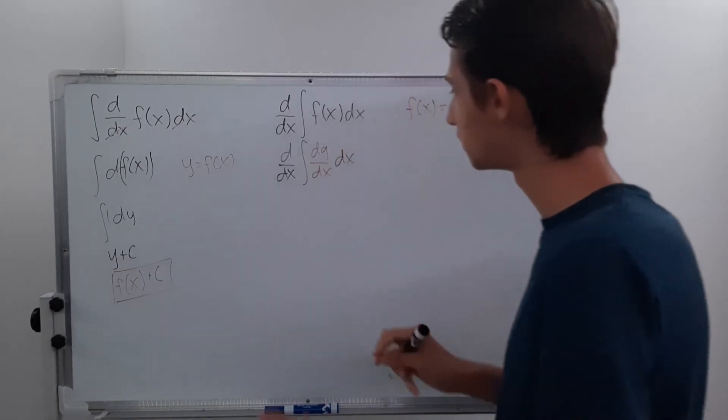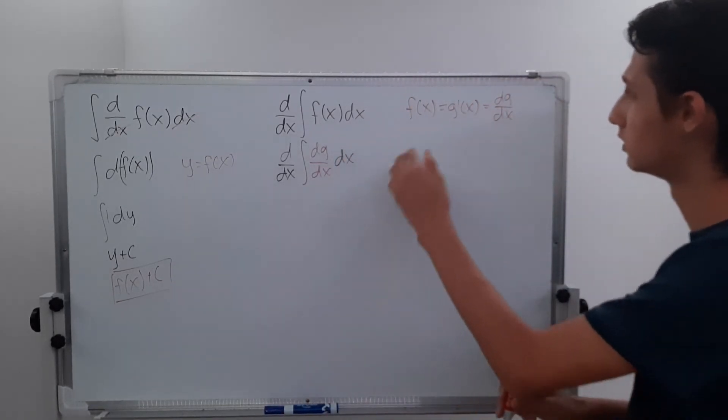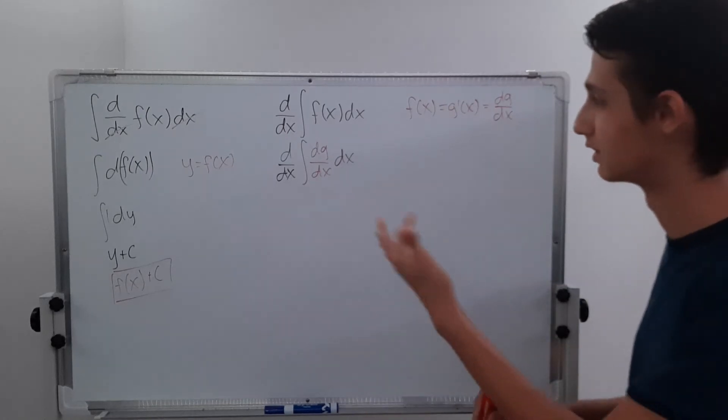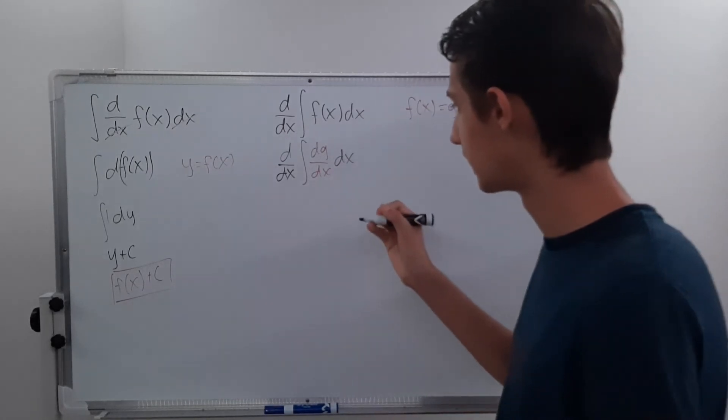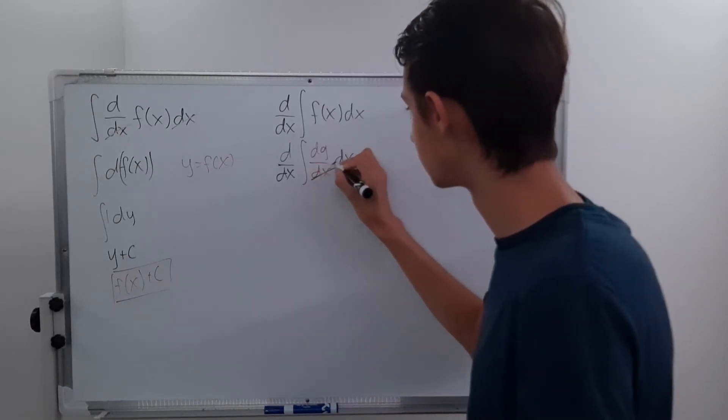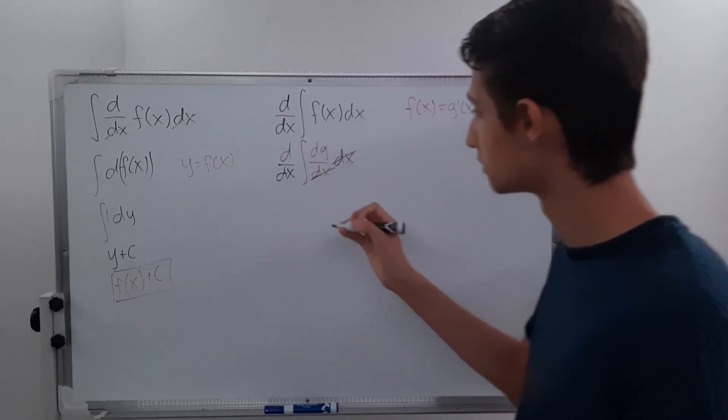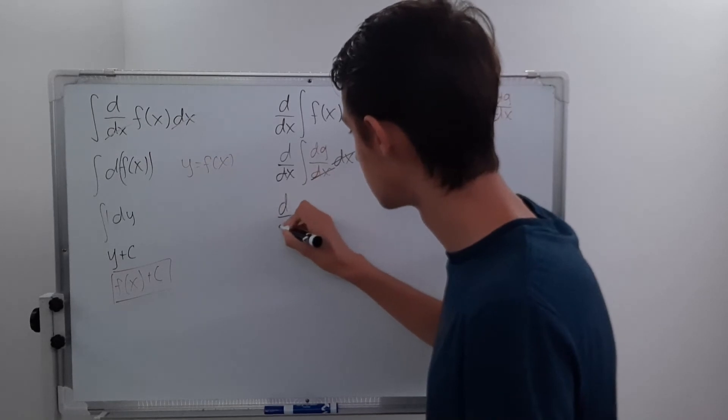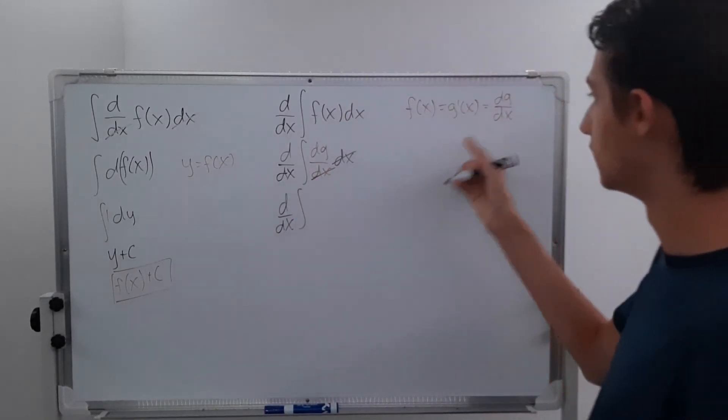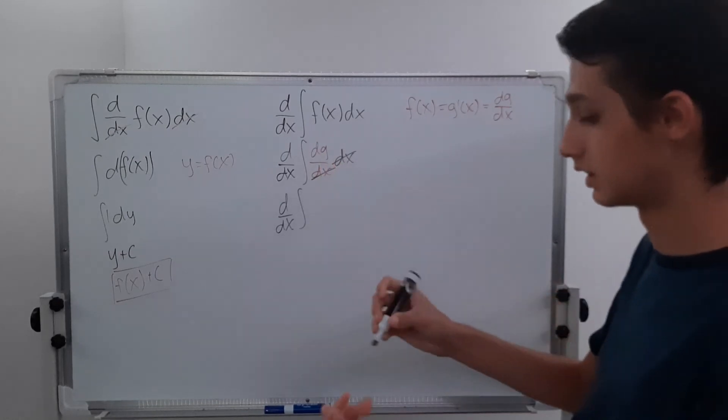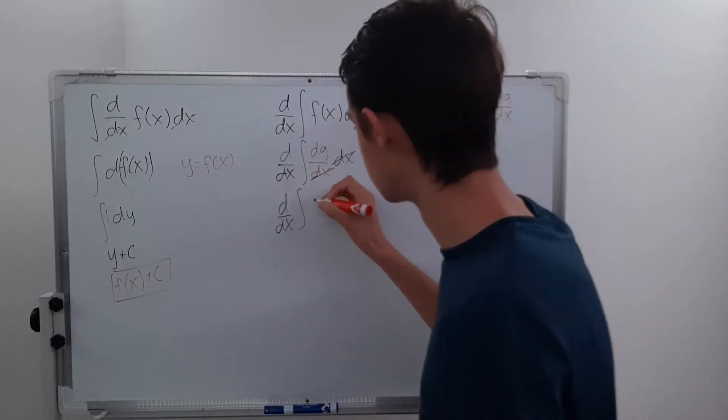And we don't have to do a u substitution because we're still using the variable x. We just kind of changed the function around. And again, we can cancel these dx's. And we're left with d dx of the integral of dg. It's just dg. That's all that's left. So I'm going to write that in red here.